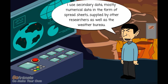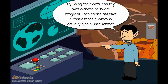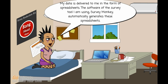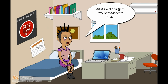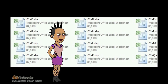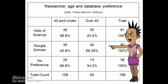I use secondary data, mostly numerical data in the form of spreadsheets, supplied by other researchers as well as the weather bureau. By using their data and my own climatic software program, I can create massive climatic models, which is actually also a data format. My data is delivered to me in the form of spreadsheets. The software of the survey tool I am using, SurveyMonkey, automatically generates these spreadsheets. If I open my spreadsheets folder and click on any spreadsheet icon, the spreadsheet would look something like this.